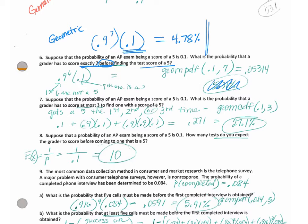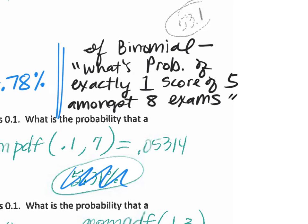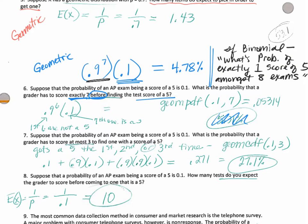Students asked: what would it be like if it was binomial? If this problem was worded in a binomial fashion, it would say something like: what's the probability of exactly one score of a 5 amongst 8 exams? Because that can place the one winner anywhere amongst the 8. But this question defined that you have to score 7 and then get a winner — that's geometric.